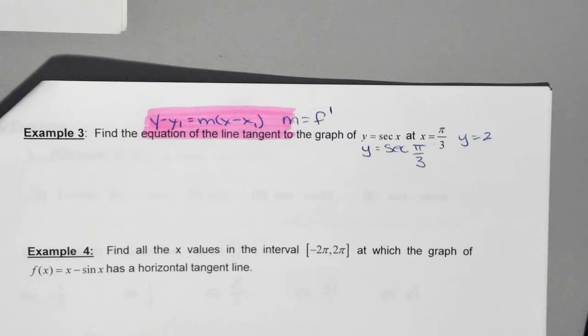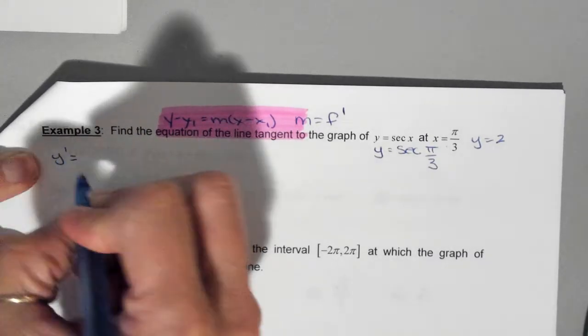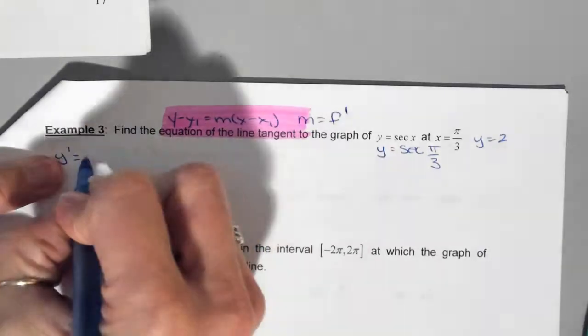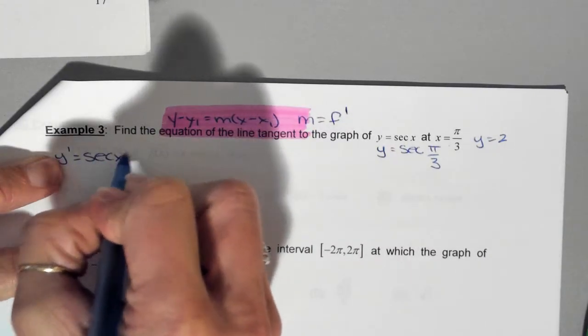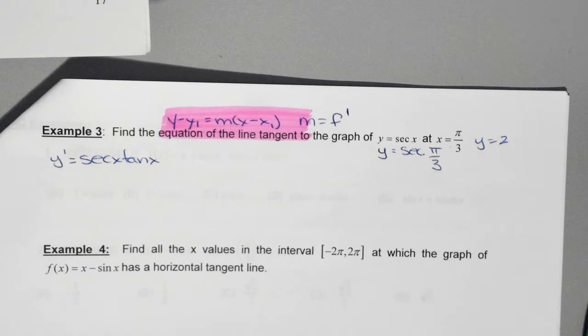How do we find the slope? Take the derivative, y prime. So we have y prime is equal to. What is the derivative of the secant? Secant x tangent x. It's okay to look on the other page. Now what do I do with this? I have the derivative. What do I do?